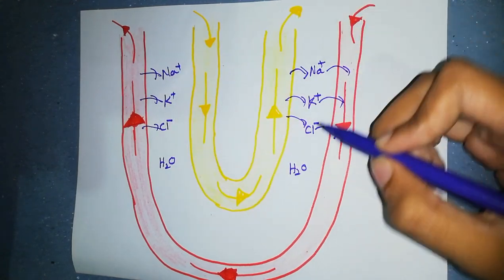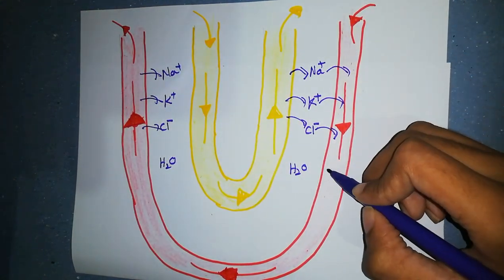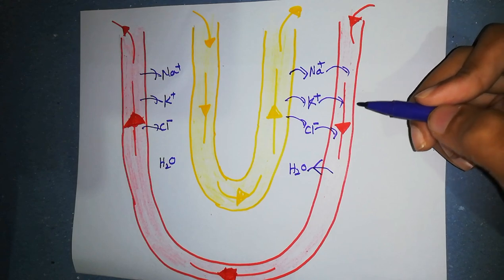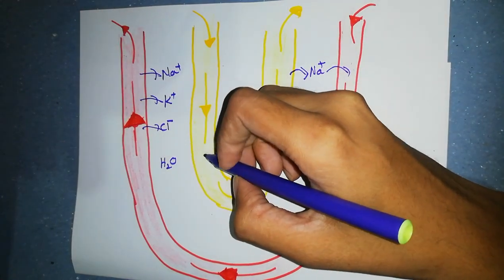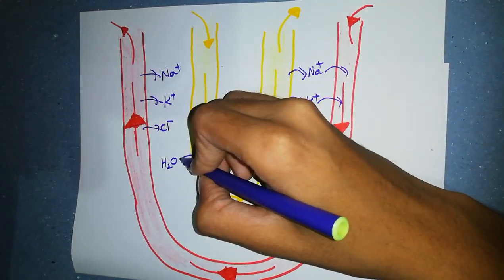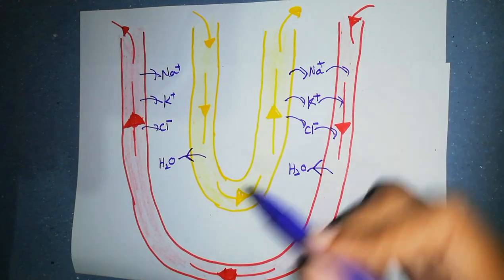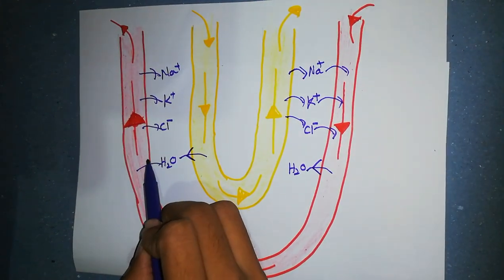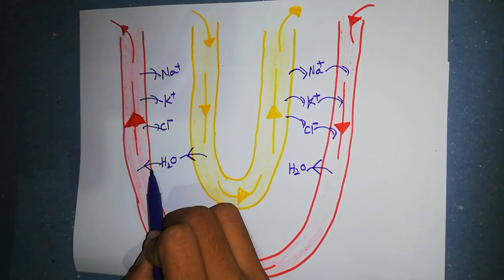From descending part of loop of Henle, water moves out into the medullary and also from the descending part of the vasa recta, water diffuses out. But water diffuses into the ascending part of vasa recta, water bypasses the medullary.